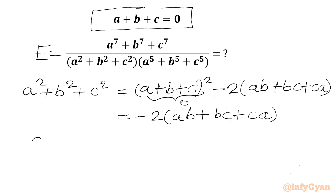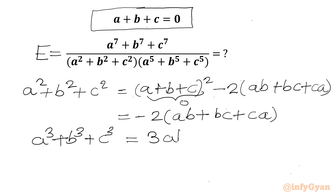Now, the sum of cubes: A cubed plus B cubed plus C cubed. We know that it is equal to 3 times ABC when A plus B plus C equals 0. So we can write that directly.